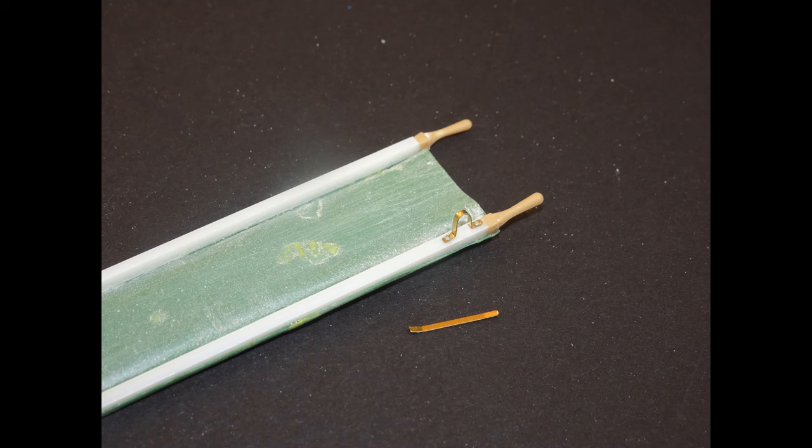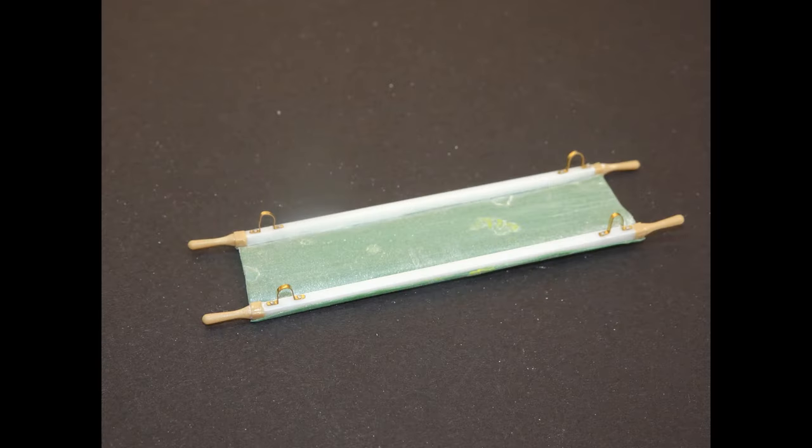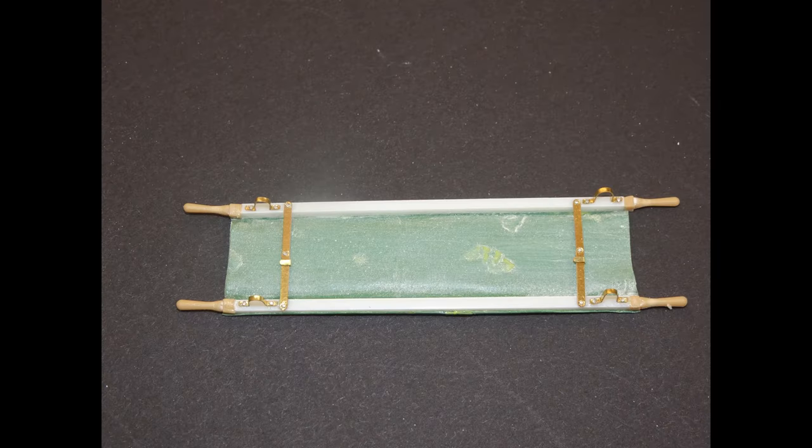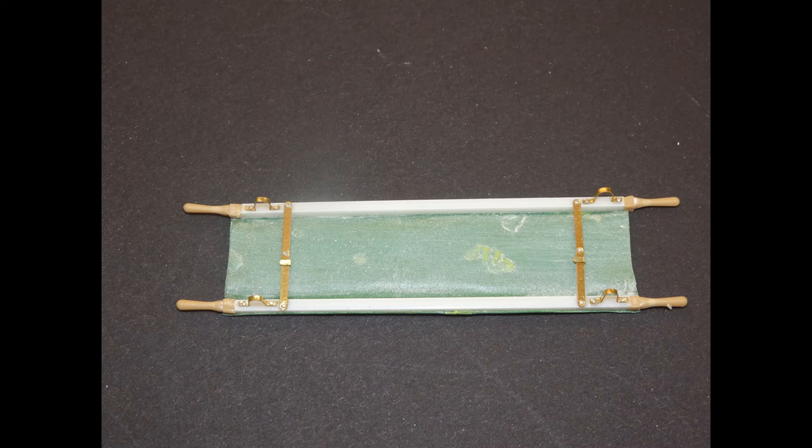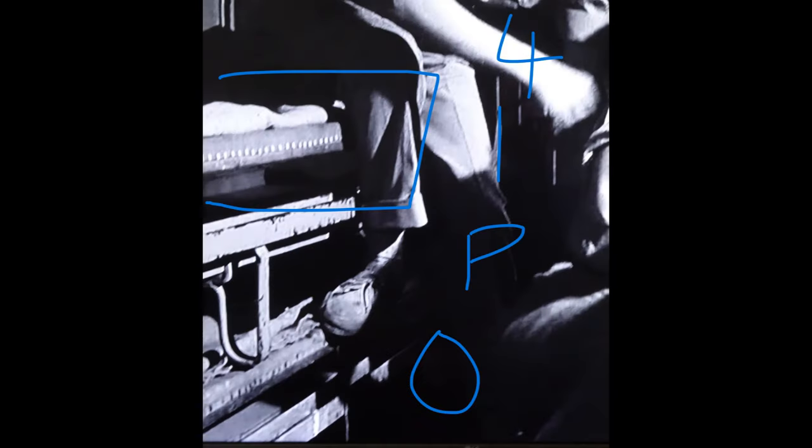I started with the PE legs, just a matter of wrapping it around a cocktail stick. As you can see there's some 0.5mm rivets added as well. And then we had some strengthening bars from the PE set. So the underneath was looking really good.